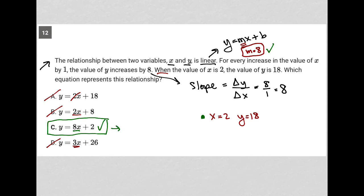We replace y with 18, set that equal to 8, replace x with 2. We're just replacing it with what we know from the question, and then plus 2. And then we can see here that 8 times 2 is 16, plus 2 is, in fact, 18. This is a true statement. And that is why choice C is correct.